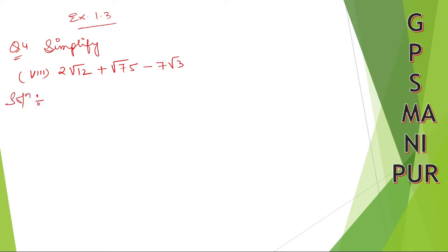Solution: 2√12 + √75 - 7√3. Let me write down 2 here, √12. For 12 let me find the prime factor: 2×6 is 12, 2×3 is 6. So I can write this as 2×2×3 plus 75.